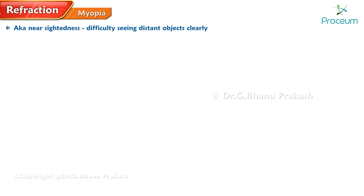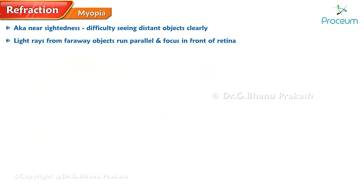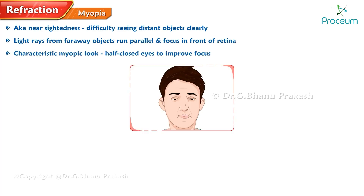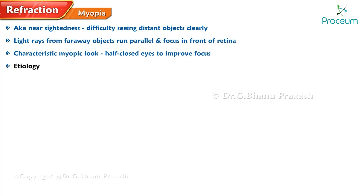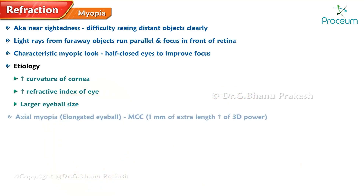Myopia, commonly known as nearsightedness, is a visual impairment where individuals have difficulty seeing distant objects clearly. This occurs because the rays of light from faraway objects run parallel and focus in front of the retina instead of directly on it. The characteristic myopic look is due to the patient's tendency to half-close their eyes to improve focus. Myopia can be caused by increased curvature of the cornea, an increased refractive index, and larger eyeball size. Axial myopia, resulting from an elongated eyeball, is the most common cause, with every 1 mm of extra length producing an increase of 3 diopters of power.